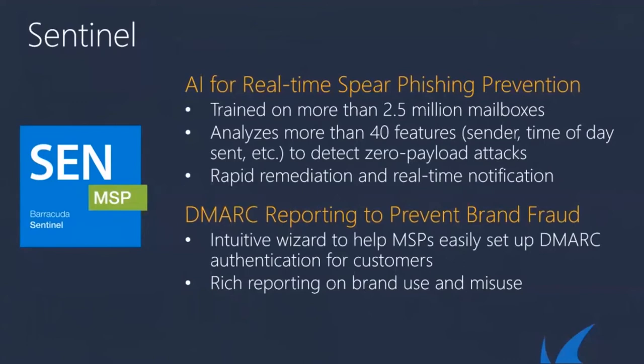Traditional gateway defences miss these types of attacks, especially when they go without a payload or malicious attachment. Barracuda Sentinel applies machine learning techniques to build a model of what is a good email for a specific user and what it's likely to look like. This means that important emails get through when they're supposed to, while spear phishing attacks get stopped in their tracks. Sentinel also integrates an intuitive wizard to easily set up and monitor DMARC.